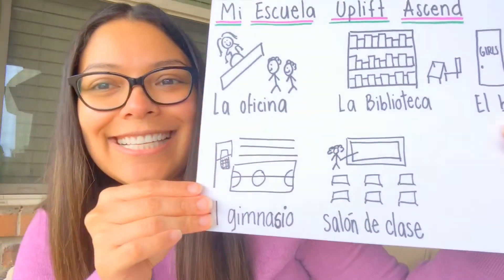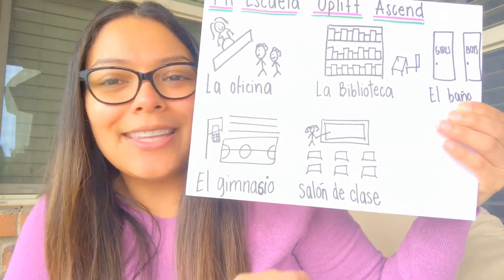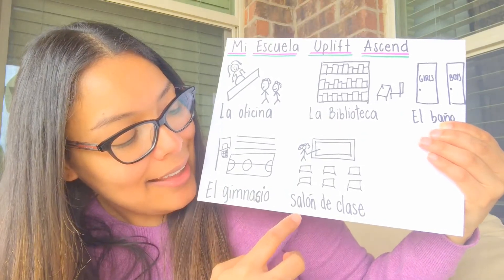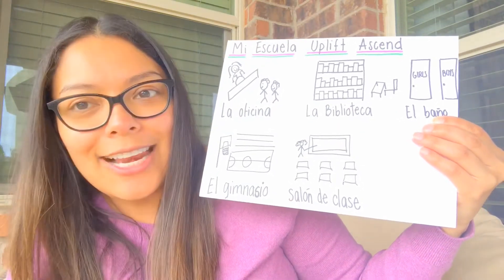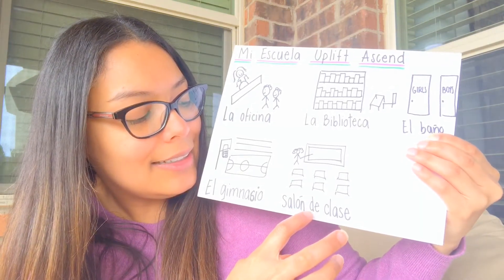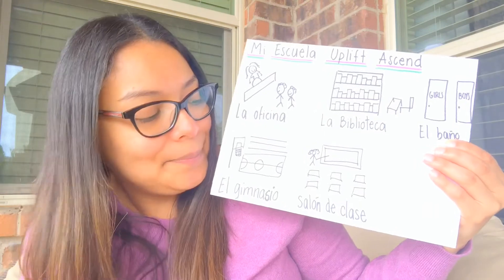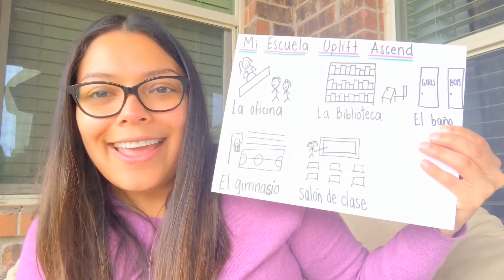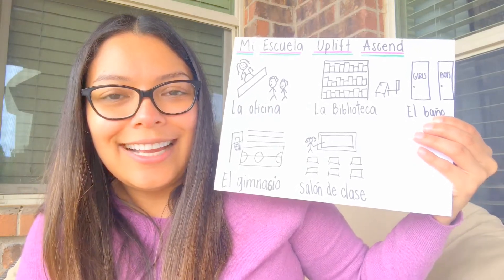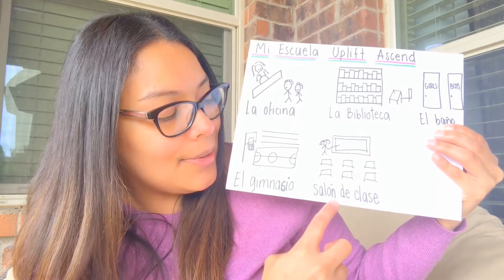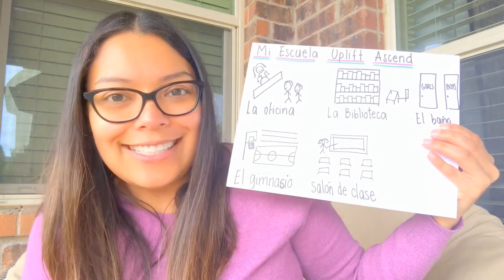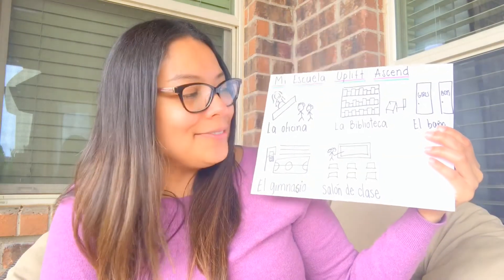Así de que vamos a dibujar nuestro salón de clases. So, now let's draw our salón de clases. Y aquí está mi salón de clases. And here is my salón de clases. Let's write salón de clases: S-A-L-O-N. Salón. D-E. C-L-A-S-E. Clase. Repeat after me: Salón de clase. All right. Now let's find out what is going to be our next one. Ahora vamos a ver cuál es el siguiente lugar.